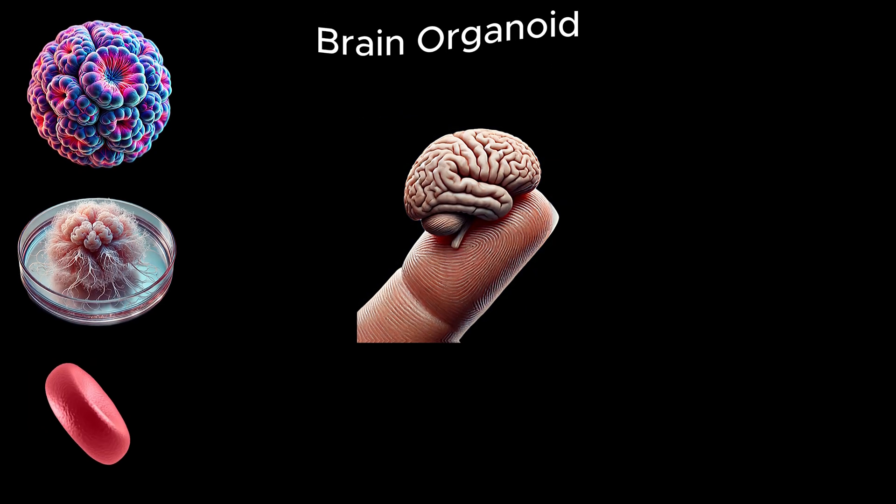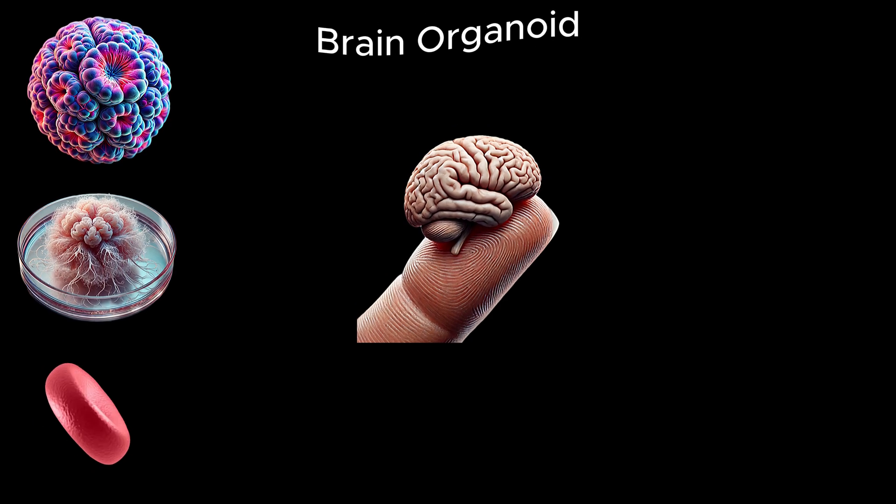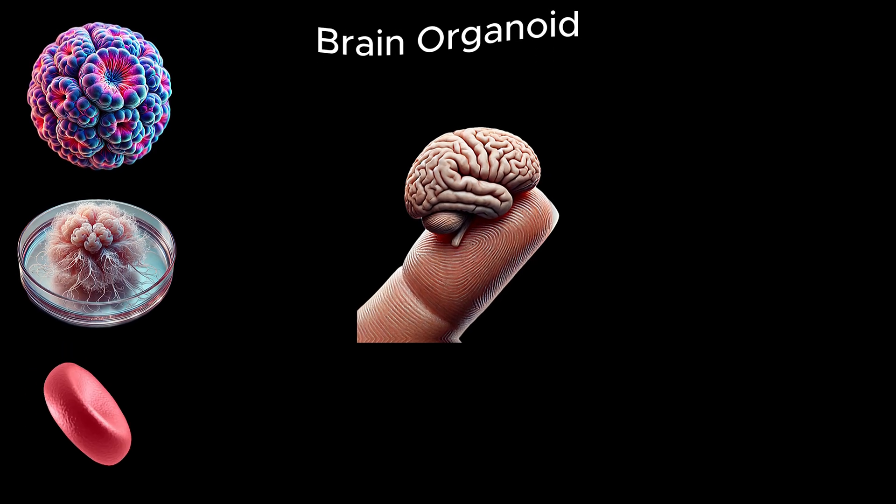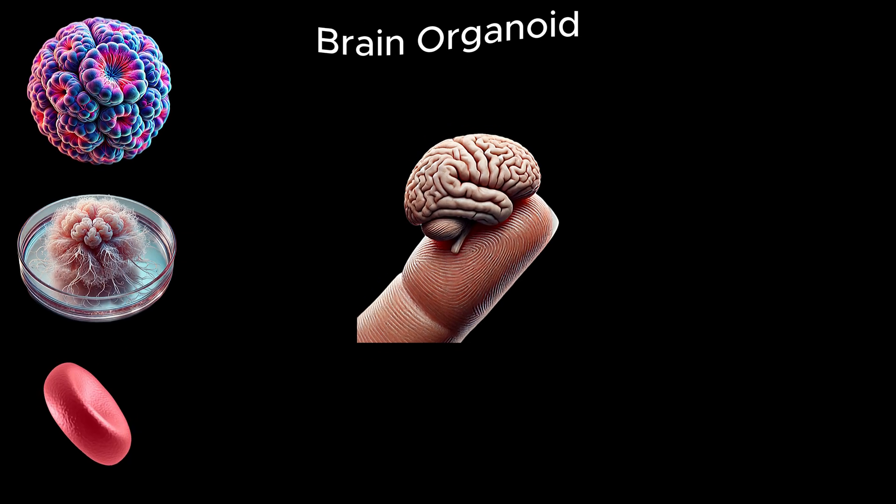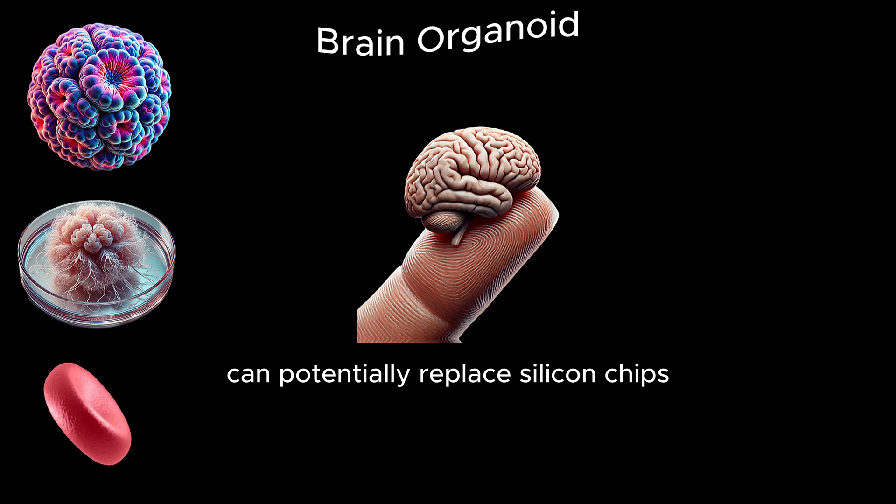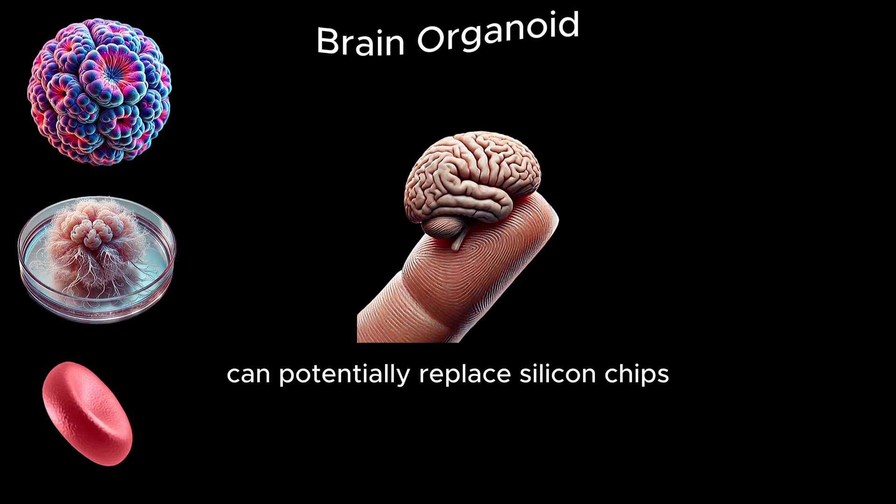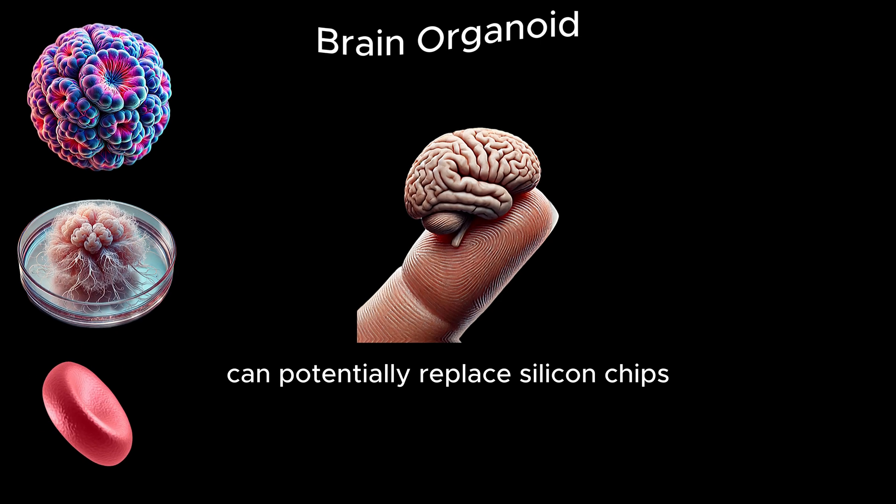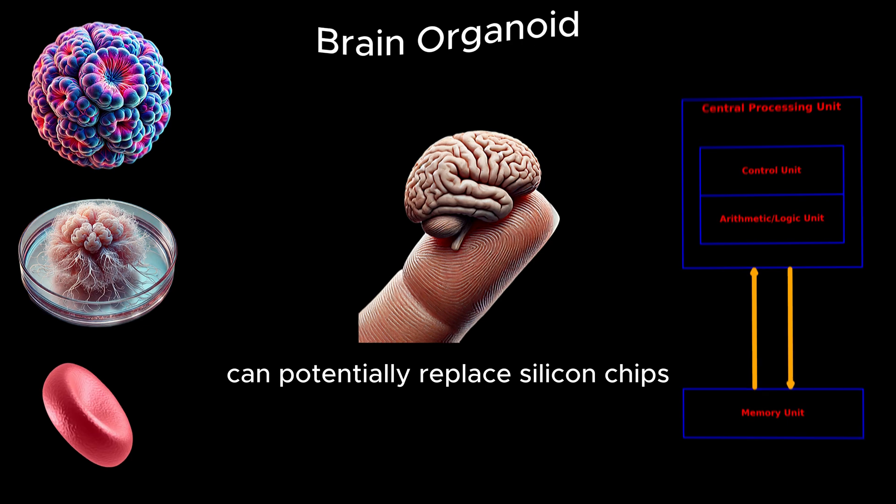Imagine a brain organoid as a simplified miniature version of a brain, small enough to fit on your fingertip. Despite their size, they exhibit complex behaviors, making them a promising bridge between biology and technology. This unique ability positions brain organoids as a potential solution to the inefficiencies of traditional computing, including the von Neumann bottleneck.